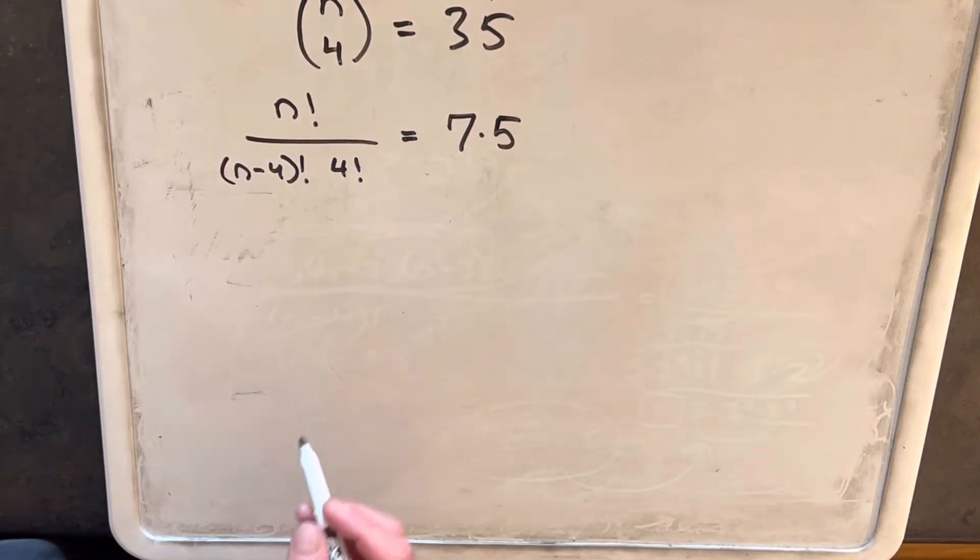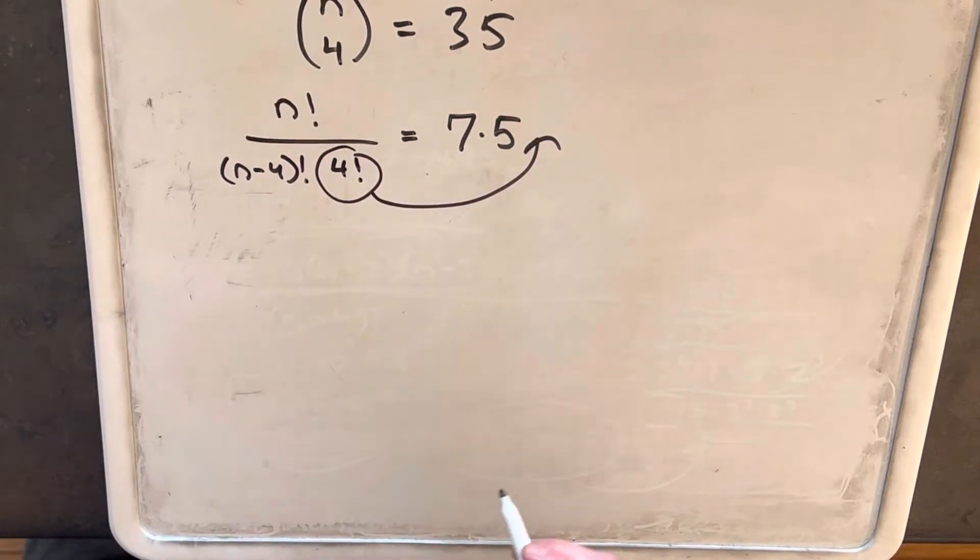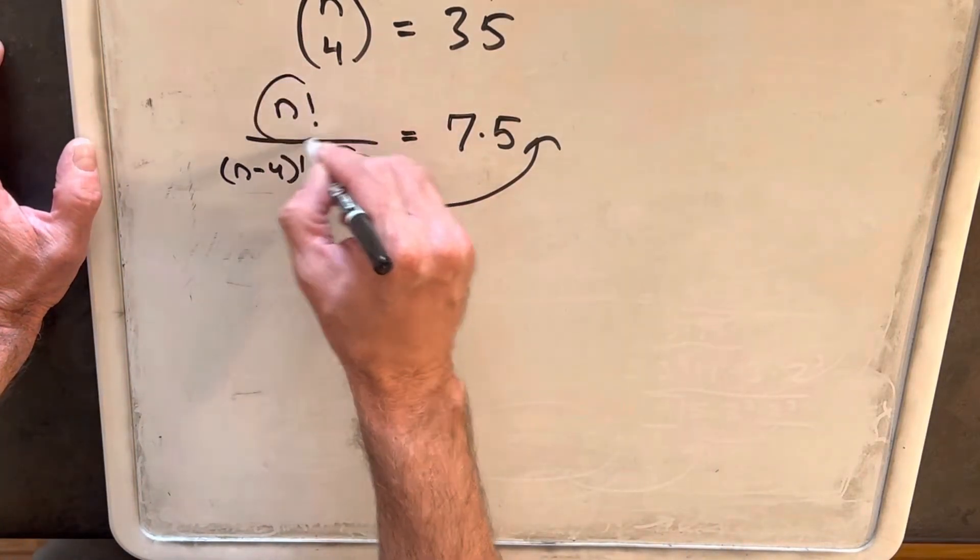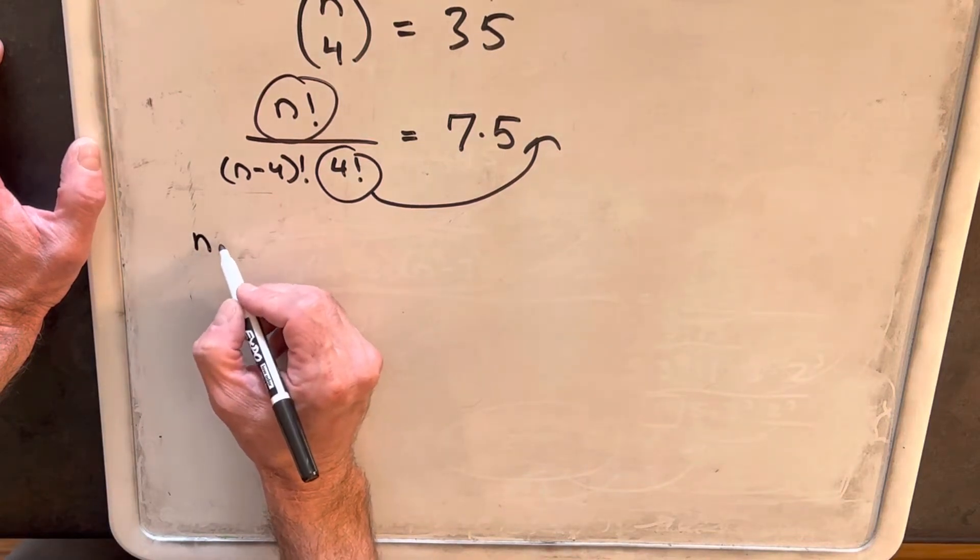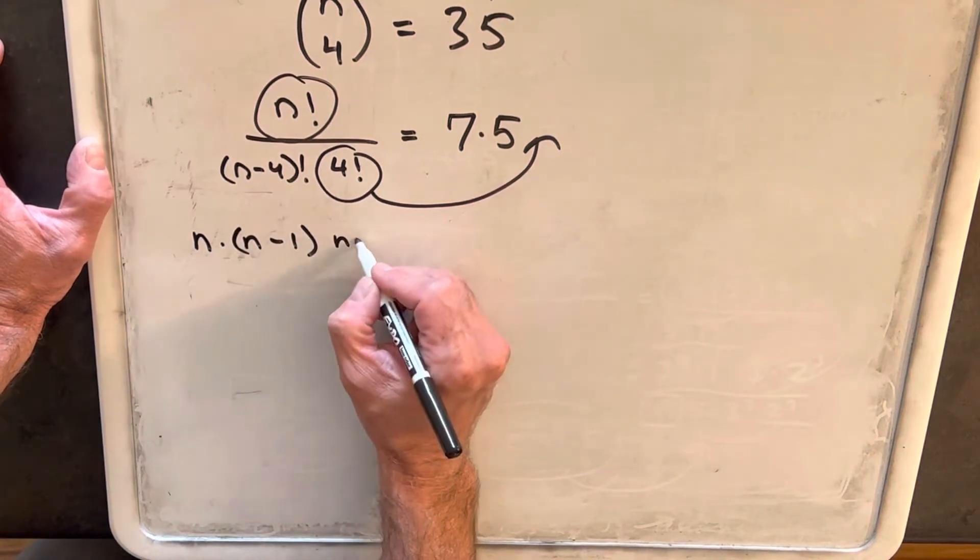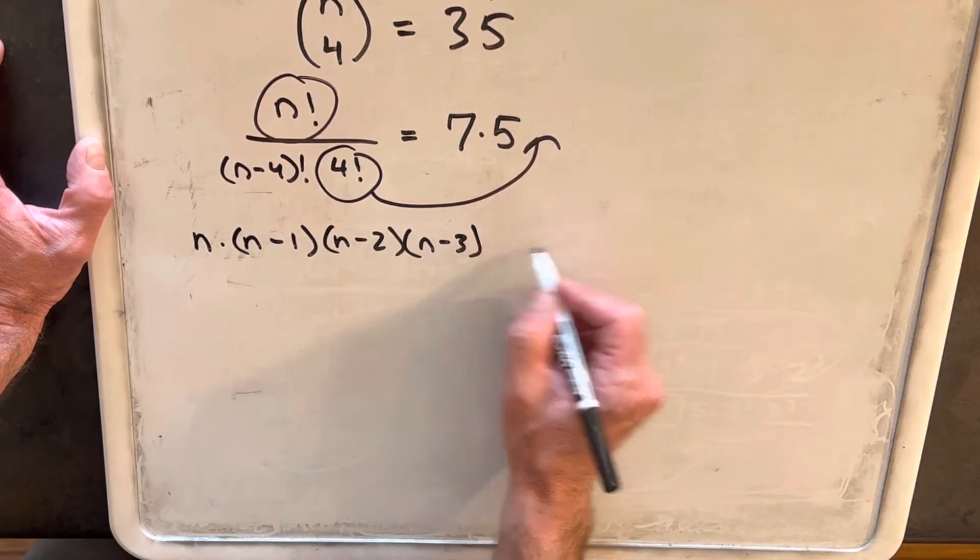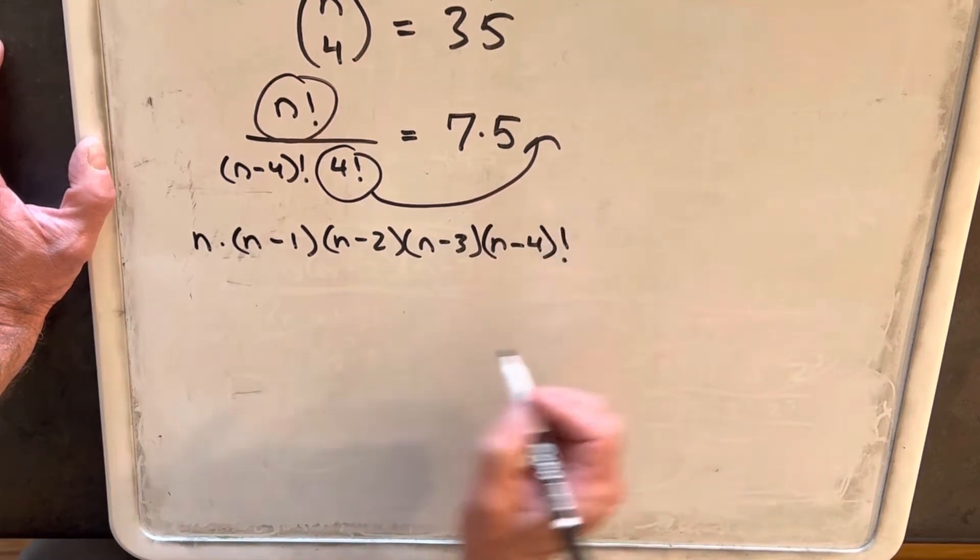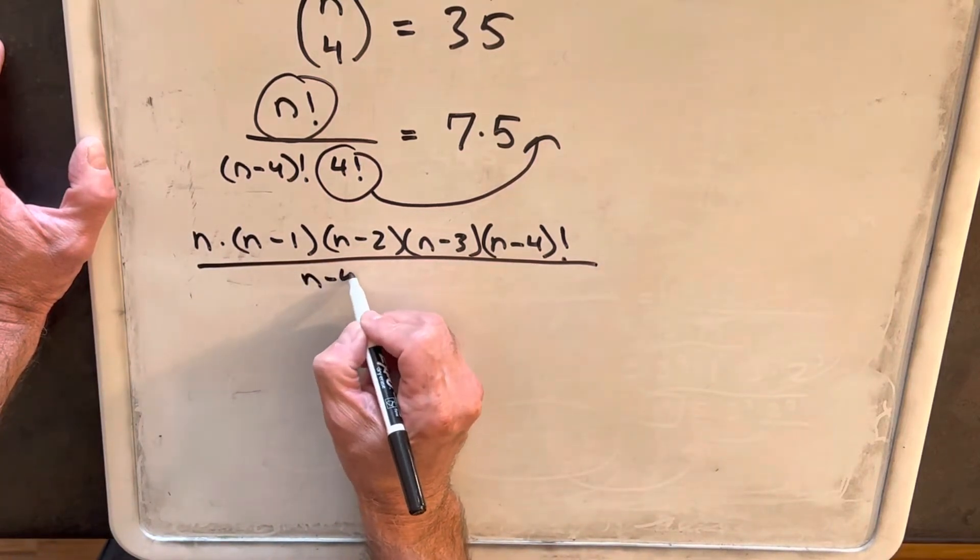Then for our next step, I'm going to take this 4 factorial and let's move it to the right side. So we're going to have, we'll rewrite this, and I'm also going to expand out this n factorial. So we'll just write out n factorial by the definition, which is n times n minus 1, times n minus 2, times n minus 3. It goes on and on, but we could kind of cap it like this by saying n minus 4 factorial over n minus 4 factorial.